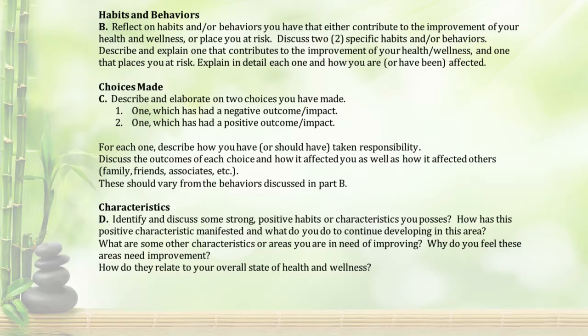In Part C, you'll describe two choices you've made — one which has had a negative outcome and one which has had a positive outcome. This can be anything from your childhood up to the present day. Then discuss the responsibility you've taken or should have taken as it relates to both, and how they've affected you and what you learned from them.